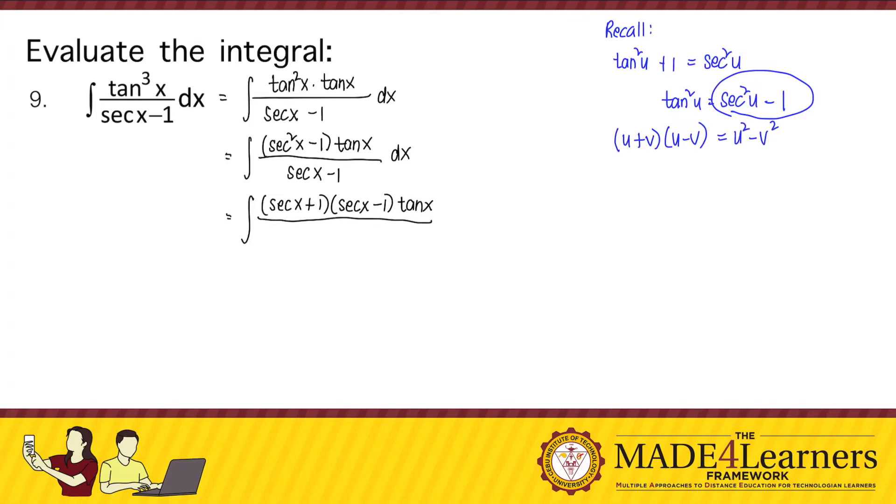So we can cancel out the common factor secant x minus 1 leaving behind secant x plus 1 tangent x dx.